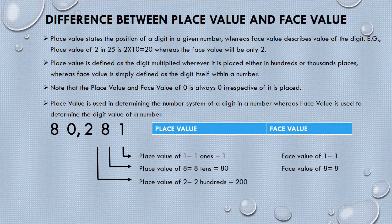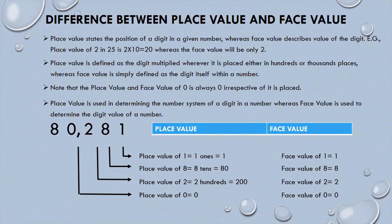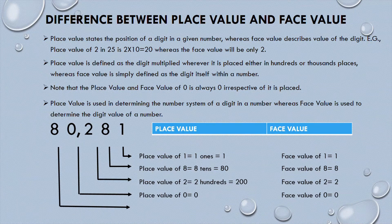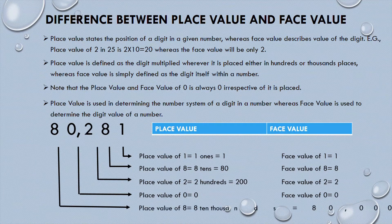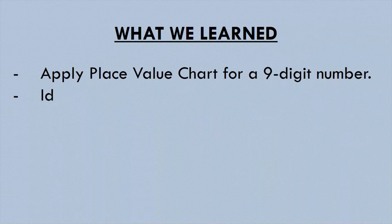The place value of 8 in the tens position is 80, whereas its face value is only 8. The place value of 0 is 0 and the face value of 0 is also 0. The place value of 8 in the ten thousands position is 80,000, and its face value is 8.